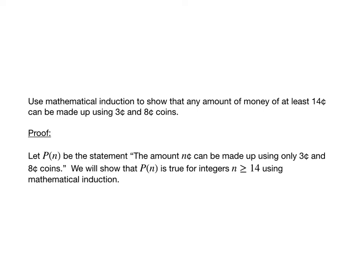So here's how the proof would go using mathematical induction. We're going to let P of N be the statement that the amount N cents can be made up using only 3 cent and 8 cent coins. And we want to show that P of N is true for integers N greater than or equal to 14 using mathematical induction.